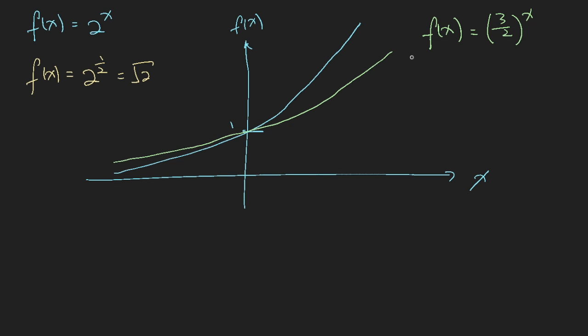Now what happens if you have f(x) equals (1/2)^x, a number that is smaller than 1? So this is also equals to 2 to the power of minus 1 times x.